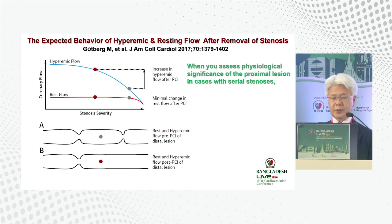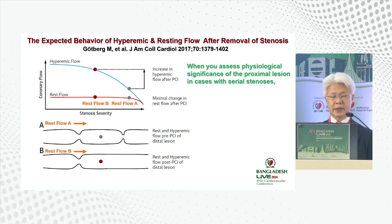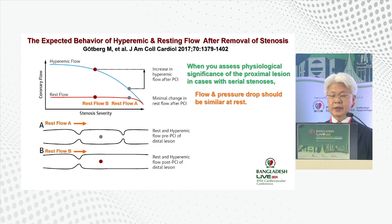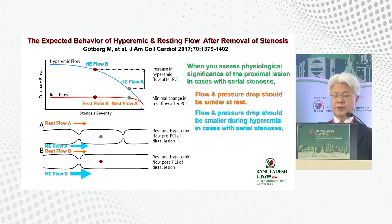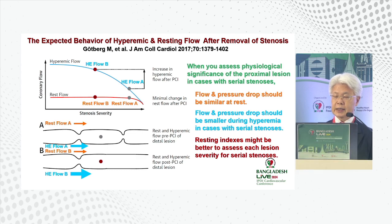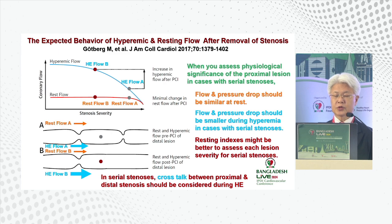Why do we need to consider crosstalk when using FFR for serial stenosis? At resting conditions, flow in serial stenosis versus single stenosis is very similar. However, during hyperemia, the distal portion with no flow limitation just after the proximal stenosis has very high hyperemic flow. In the proximal region, flow is limited by the distal stenosis, so the pressure drop appears smaller during hyperemia in serial stenosis — making resting indices better for assessing each lesion's severity.